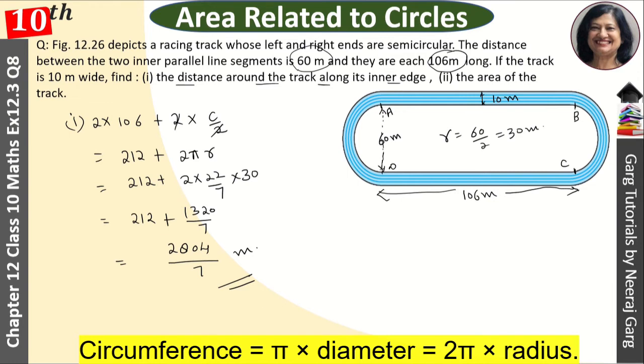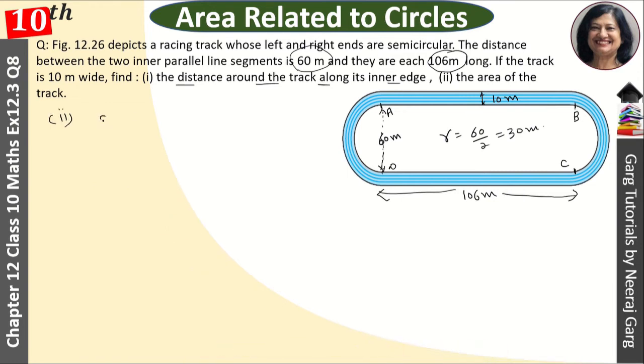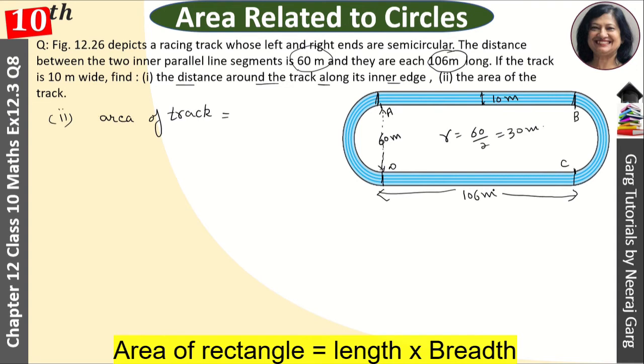The second part is the area of track. So first let's understand. See, if we join this portion, so this is a rectangle. Similarly, this is a rectangle. And what is the area of rectangle? L into B, and both are twice. See, this is 10, and 106 has already been given here.